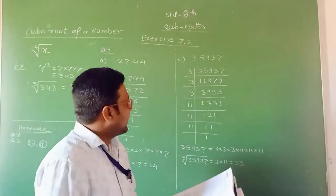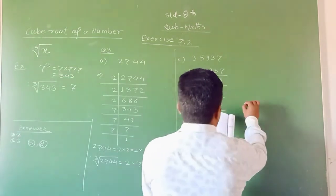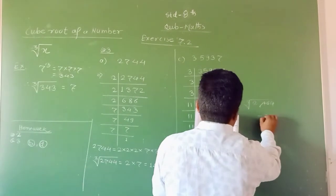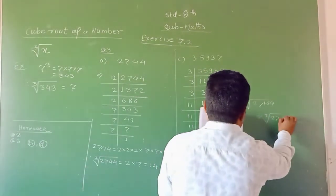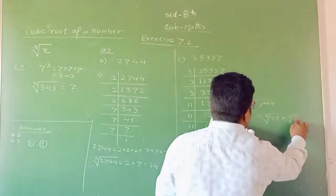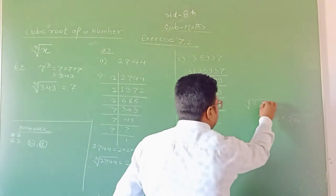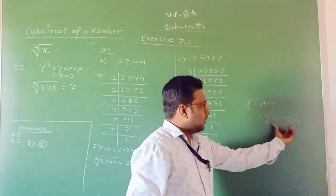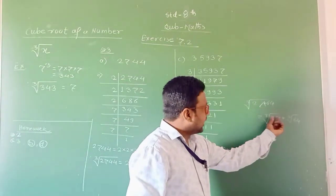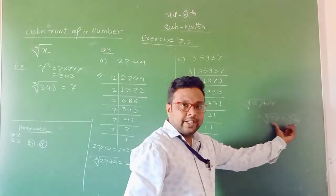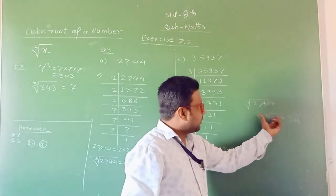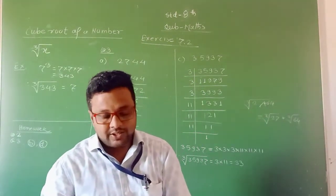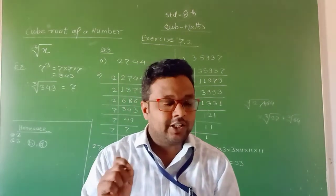Statement F: Cube root of (27 + 64) is equal to cube root of 27 plus cube root of 64. Since there is a plus sign, you cannot write it like that separately. If there were multiplication, you could write them separately. According to the given statement, this statement is wrong. Therefore, we write false and mark F.